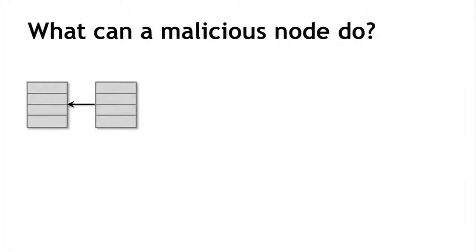Let's understand why this consensus algorithm works by asking how a malicious adversary could subvert the process. We have a couple of blocks in the blockchain extending back to the genesis block. Can a malicious attacker Alice simply steal bitcoins belonging to another user? Even if it's Alice's turn to propose the next block, she cannot steal other users' bitcoins because she cannot forge their signature. As long as the underlying crypto is solid, she's not able to simply steal bitcoins. Another thing she might try is denying service to Bob by not including Bob's transactions in any block she proposes. But this is nothing more than a little annoyance — Bob will just wait until an honest node gets to propose a block.